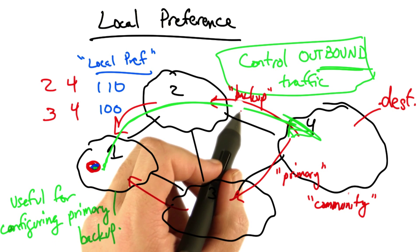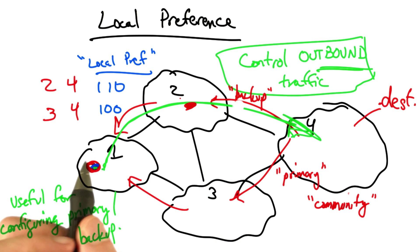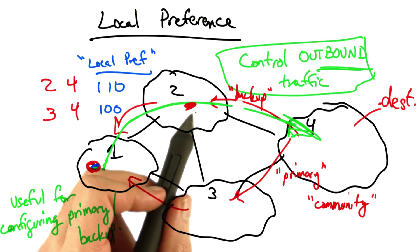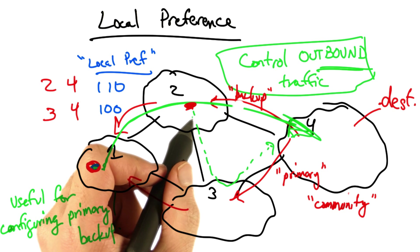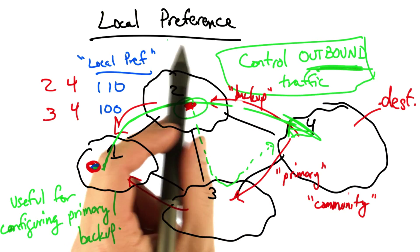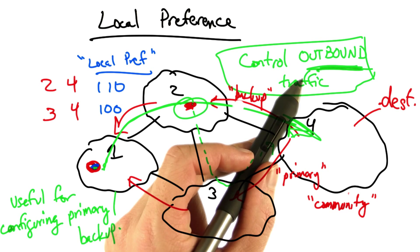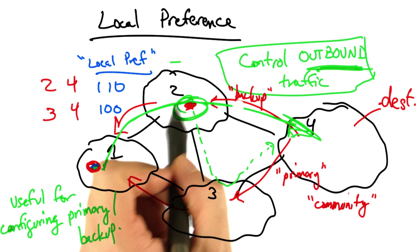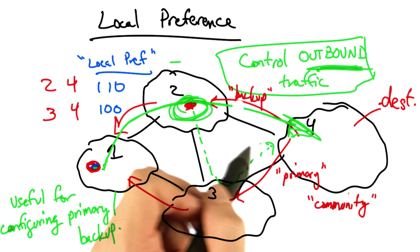The backup community value might cause a router in AS2 to adjust its local preference value, thus affecting how AS2's outbound traffic choices are made. So again, local preference is used to control outbound traffic. In this case, AS2's outbound traffic decision.